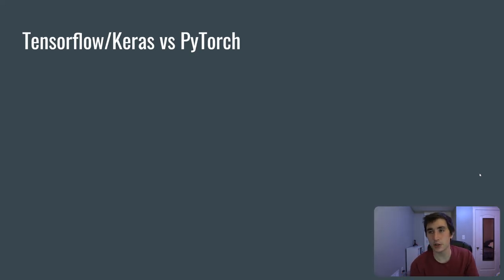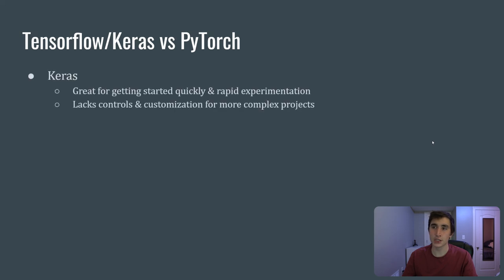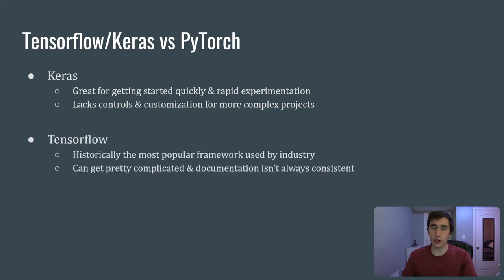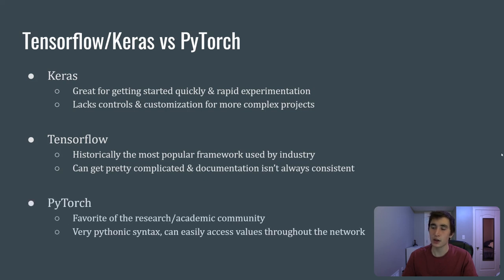In this tutorial we're using Keras, which is great for getting started quickly and rapid experimentation. As you get more advanced, you may find it lacks the complete control of PyTorch or full TensorFlow. TensorFlow has historically been most popular in industry but can get complicated with inconsistent documentation. Personally, for more complex neural network work including my master's thesis, I use PyTorch, which has a pythonic syntax and lets you easily access values at any point in the network.